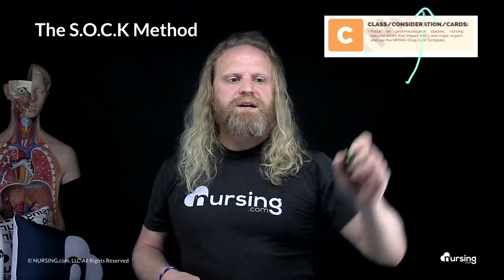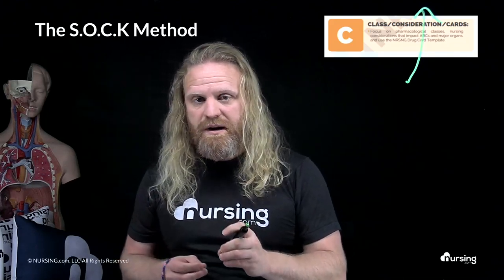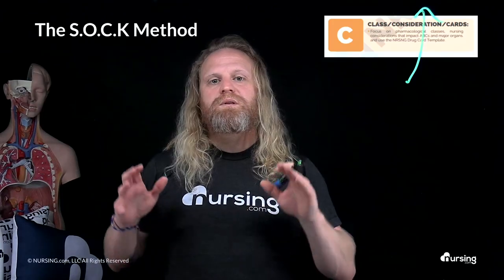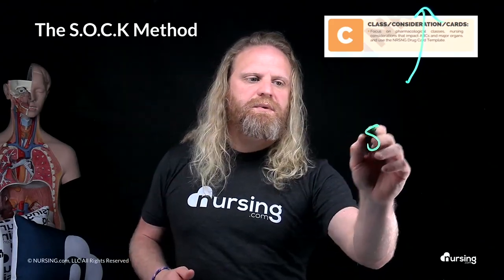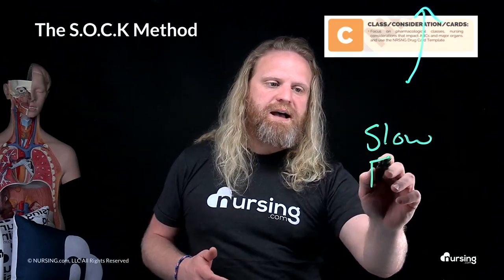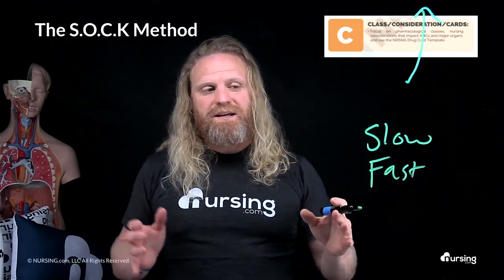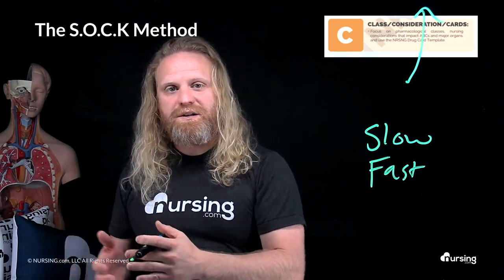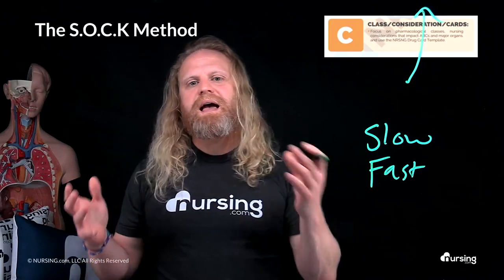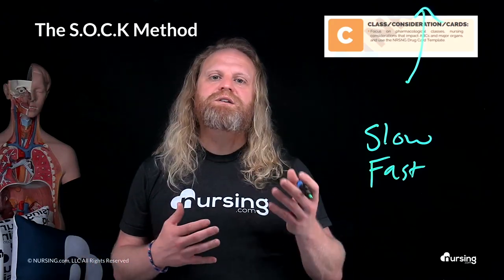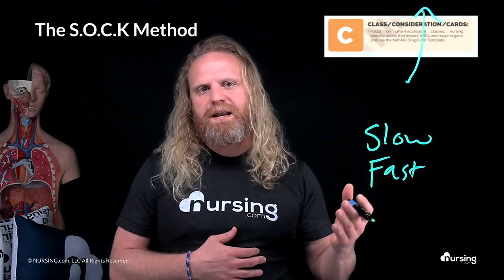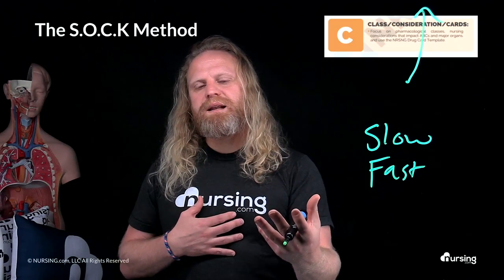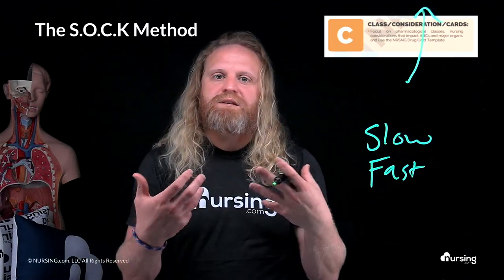Now let's talk about considerations. When learning a medication, it's really important to think about nursing considerations, which include things like administration concerns, patient education, and vital information. Within administration concerns, you might consider how slowly to administer Zofran, or on the opposite side, how fast to administer adenosine. Confusing or ignoring these is a huge problem. You might also see pregnancy categories here, or for example, teaching a patient not to drink grapefruit juice with a specific medication. Basically, look for considerations that will be detrimental to the patient, allow them to self-administer, or interfere with the intended therapy.